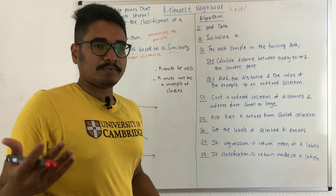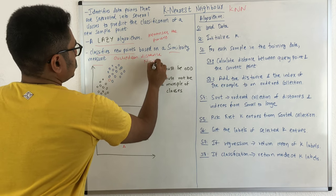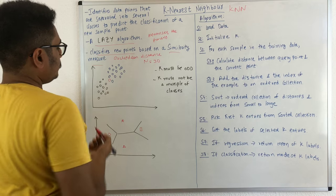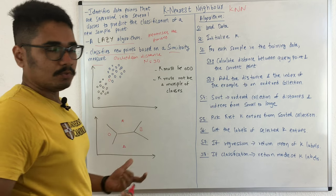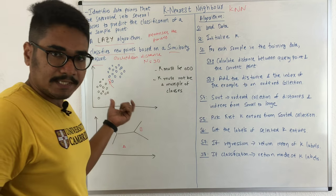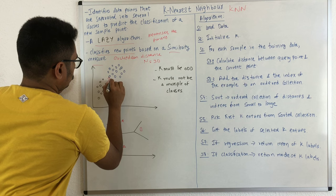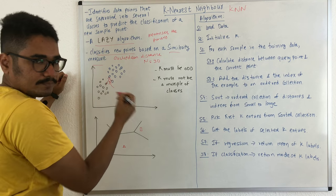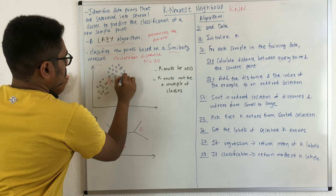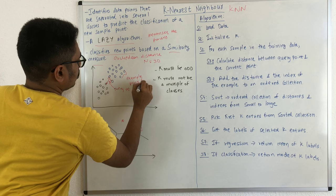Let's understand the working of KNN. On this axis you have some set of points — about 30 vectors or 30 data points. Some data points are labeled in black, some are in blue, and some are in red. We choose one point that we are interested in and want to find the neighborhood of. It basically calculates the distances from this query point to each of the current points. These are the current points and this is the query point.